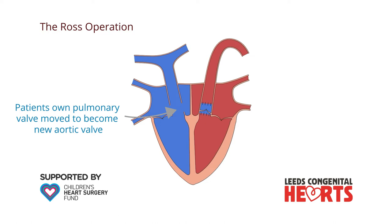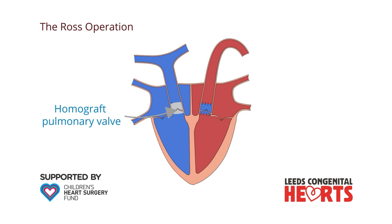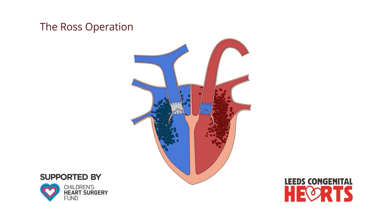A short tube containing a valve called a homograft is then sewn in to become a new pulmonary valve. The homograft originally comes from a human donor, having been preserved until required.